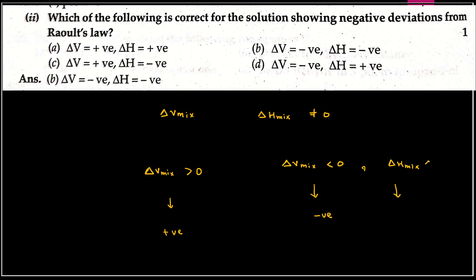Negative deviation ke liye do conditions hoti hain: ek to aapke paas delta V mix negative hona chahiye, aur delta H mix bhi negative hona chahiye. Clear hai — ye conditions aapke paas rely karaati hain.